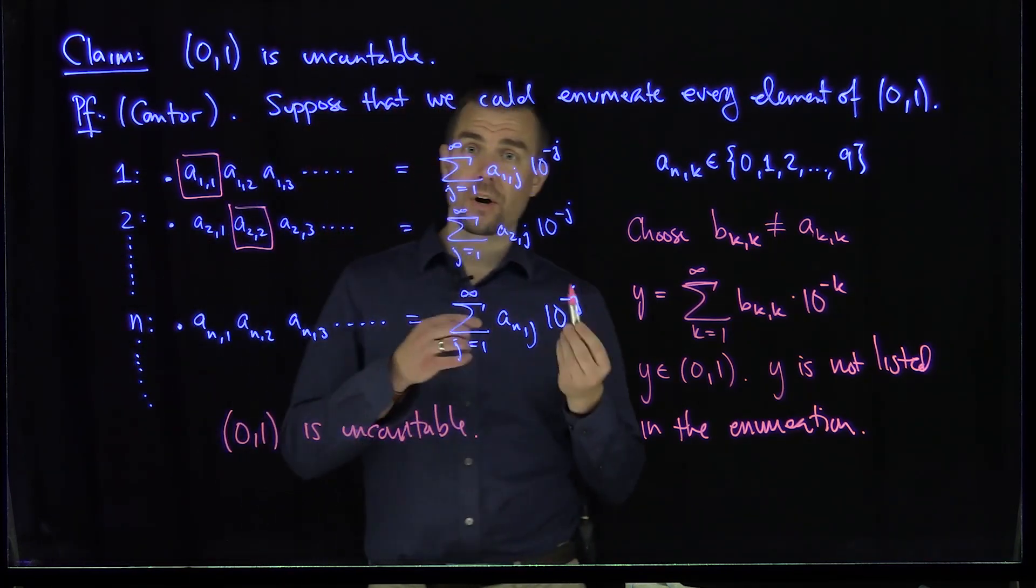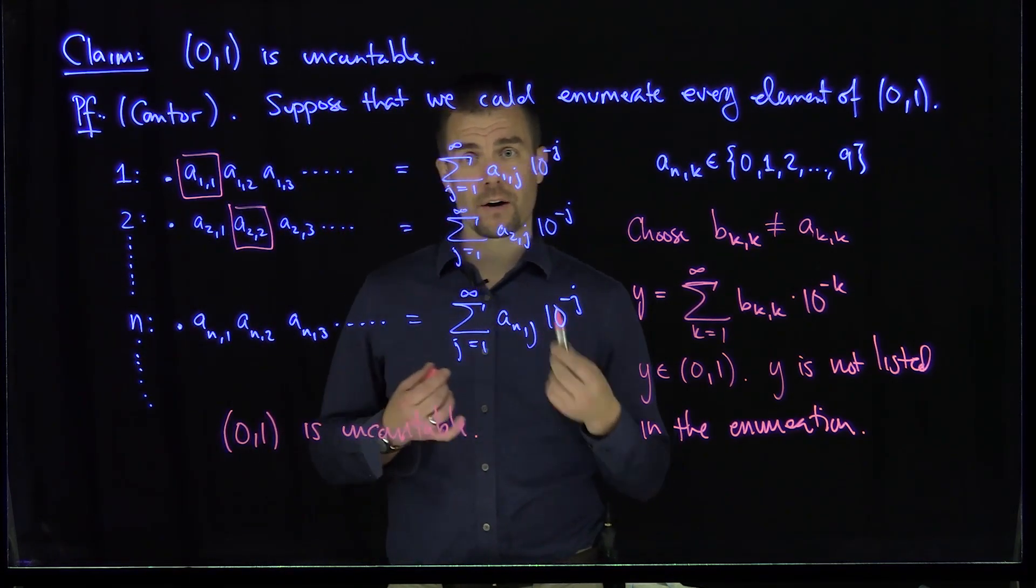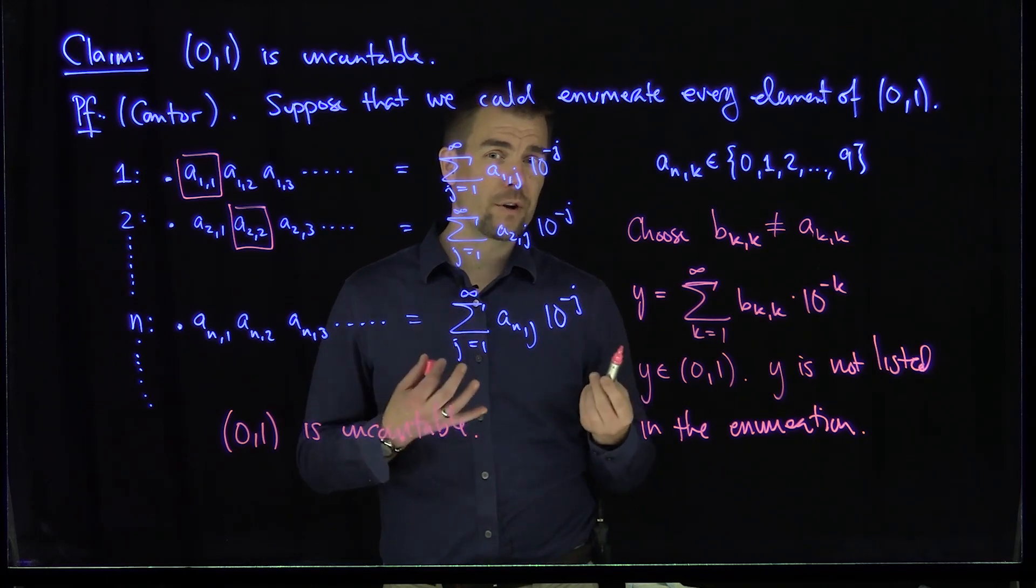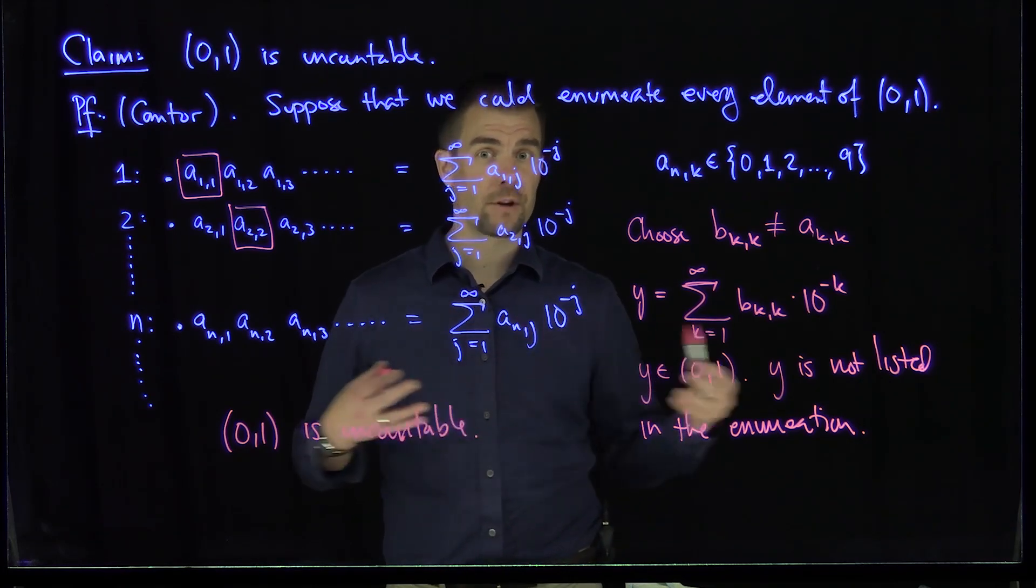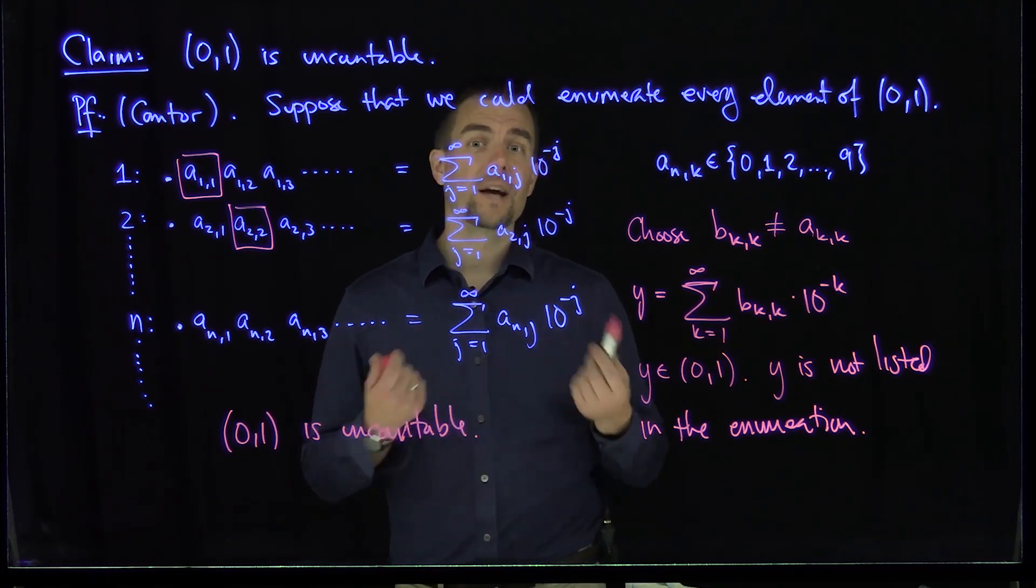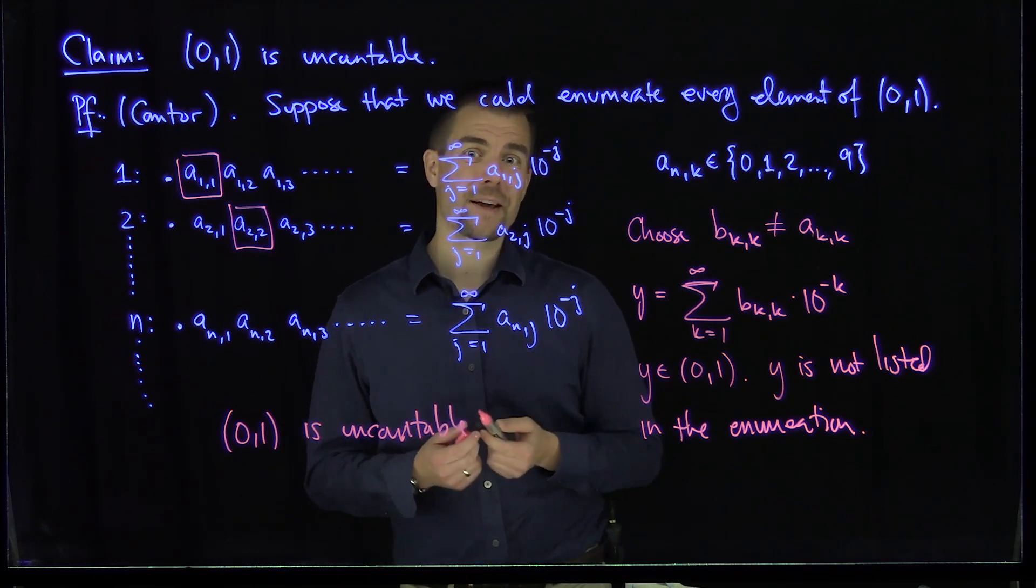So now we've shown that there is a cardinality different from the cardinality of the natural numbers. In future videos, we'll see how we can construct an infinite chain of cardinalities using another one of Cantor's results. Thank you very much.